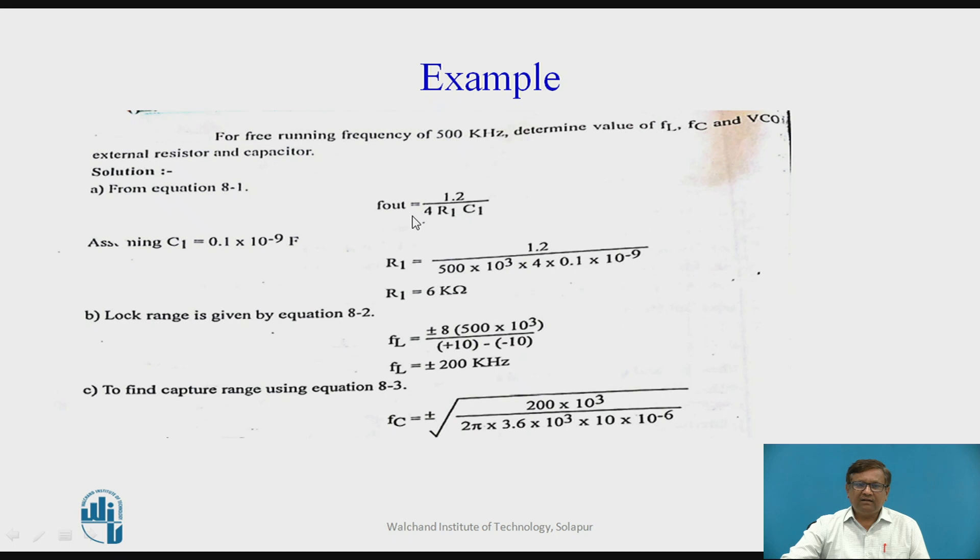From earlier formula, F out is equal to 1.2 divided by 4 R1 C1. R1 must be within 2k to 20k so we can choose R1 within this range. We can assume C1 is equal to 0.1 nanofarad and if you put this C1 equal to 0.1 nanofarad here into this formula we get R1 is equal to 6k.